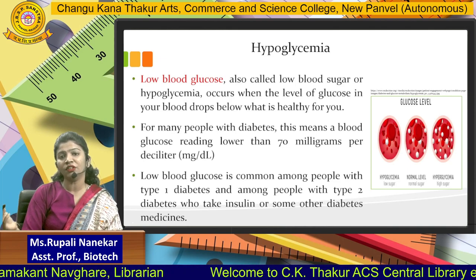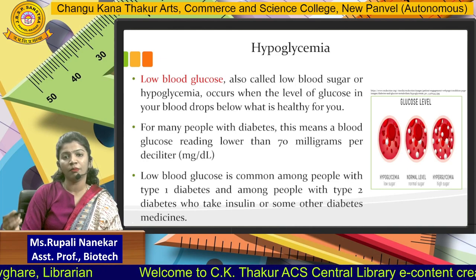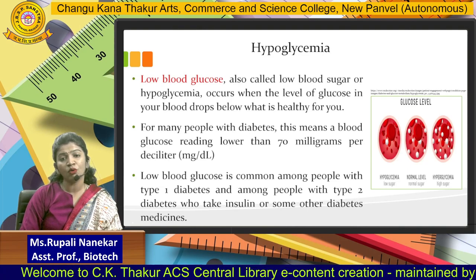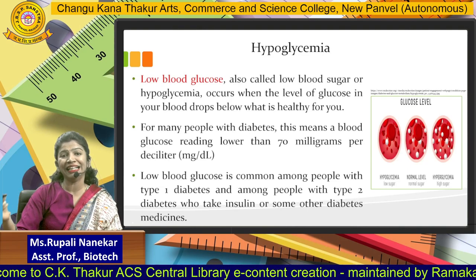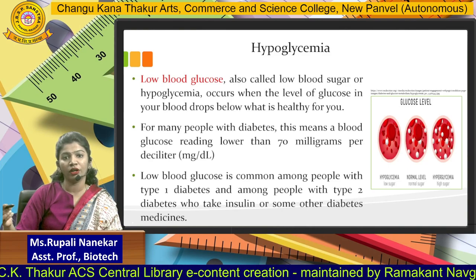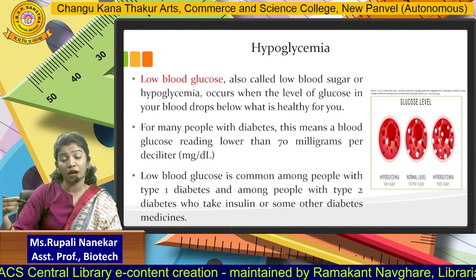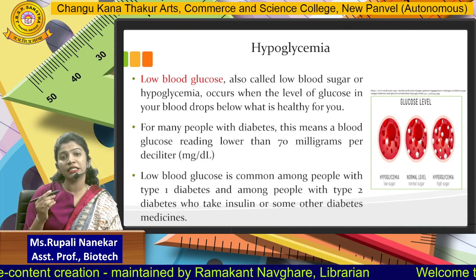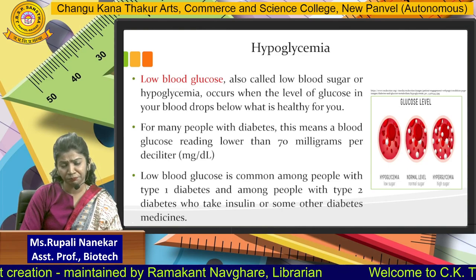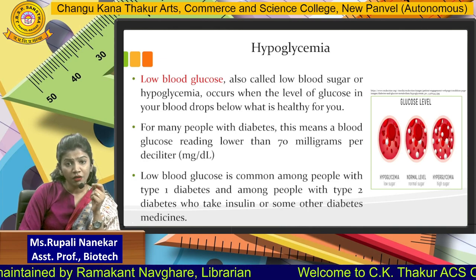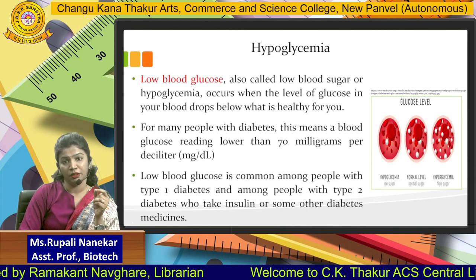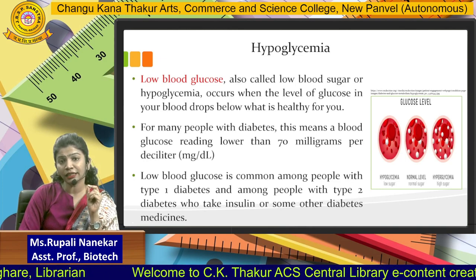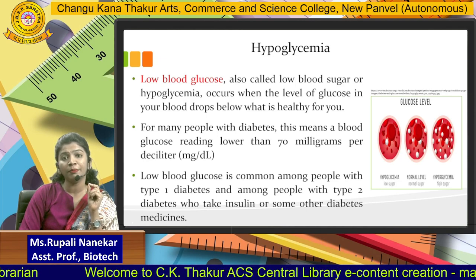We also have the classification of hyperglycemia covering type 1 and type 2 diabetes. When your body glucose drops below the healthy range — around 80 to 100 before meals, or 120 after lunch — that is low blood glucose. When the reading falls below 70, that condition is considered hypoglycemia.